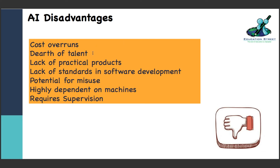Dearth of talent - I see an opportunity here. All of you looking to take your career somewhere with interest in AI - there is an absolute dearth of talent. There are so many companies who want to experiment with their applications and get AI in them, but they don't have the right people. Lack of practical products - a lot of products might be expensive if AI doesn't get cost effective. Standards of software development are not set across the industry.